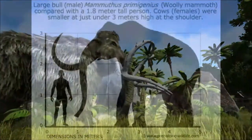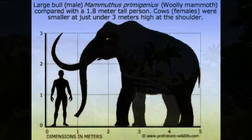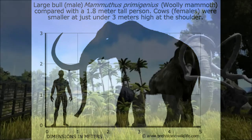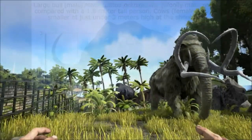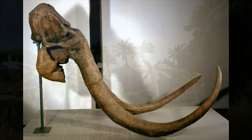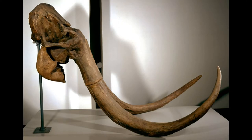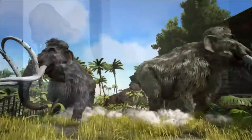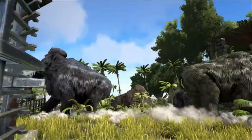The woolly mammoth stood about three metres tall at the shoulder, about the same as modern African elephants. They had a large hump on the back for fat storage to see them through times when food was scarce. They had huge curved tusks, which may have been used for fighting or for digging and looking for food, and could have been used for clearing snow off the ground to get at the grass underneath.